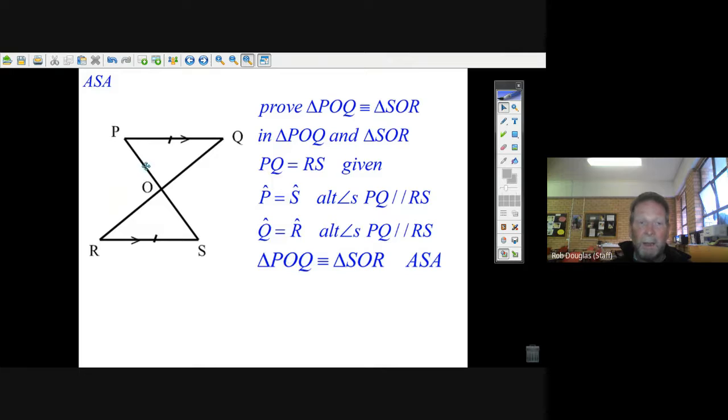Two angles and the side in between them is enough to say that those two triangles are congruent—the same in every way. Okay.